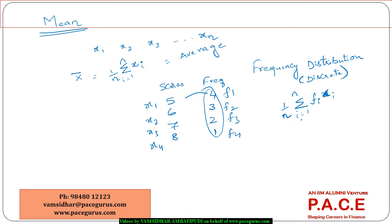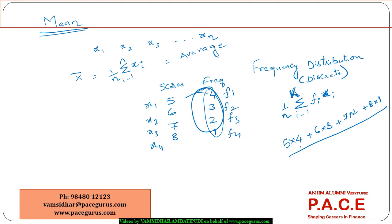In this case it is: 5×4 + 6×3 + 7×2 + 8×1 divided by the total frequency of 10. That gives us 20 + 18 = 38, plus 14 = 52, plus 8 = 60, divided by 10, coming out to 6. So the mean for this particular frequency distribution is 6. If a frequency distribution is given and I need to find the mean, that is the way I compute it.